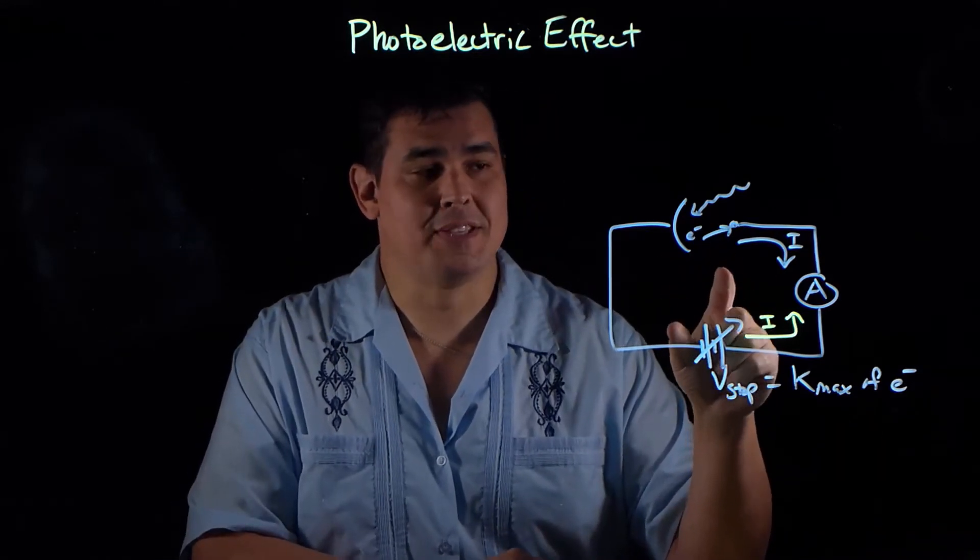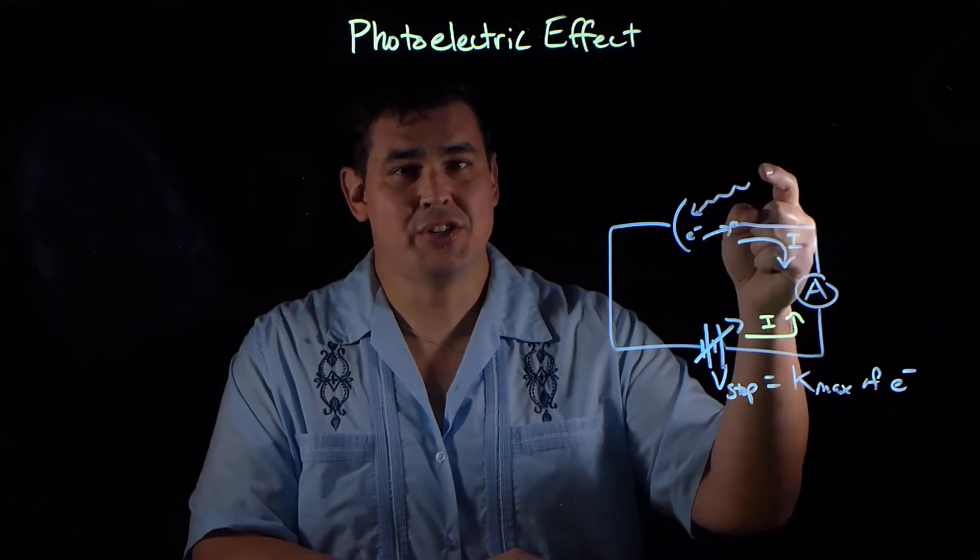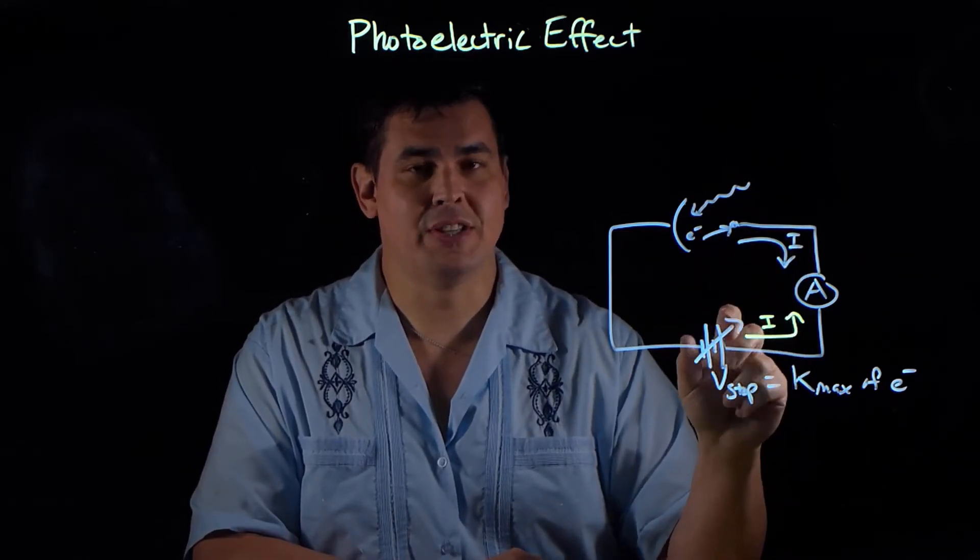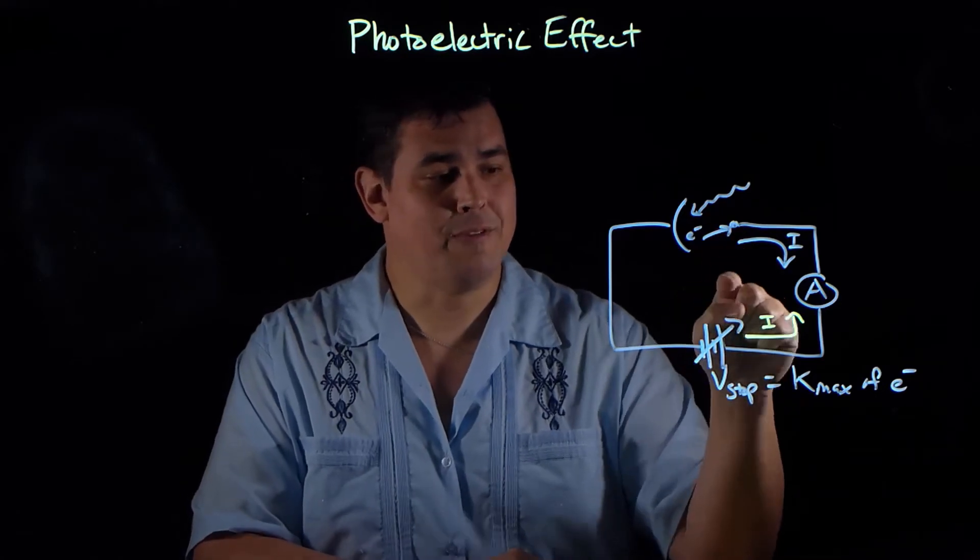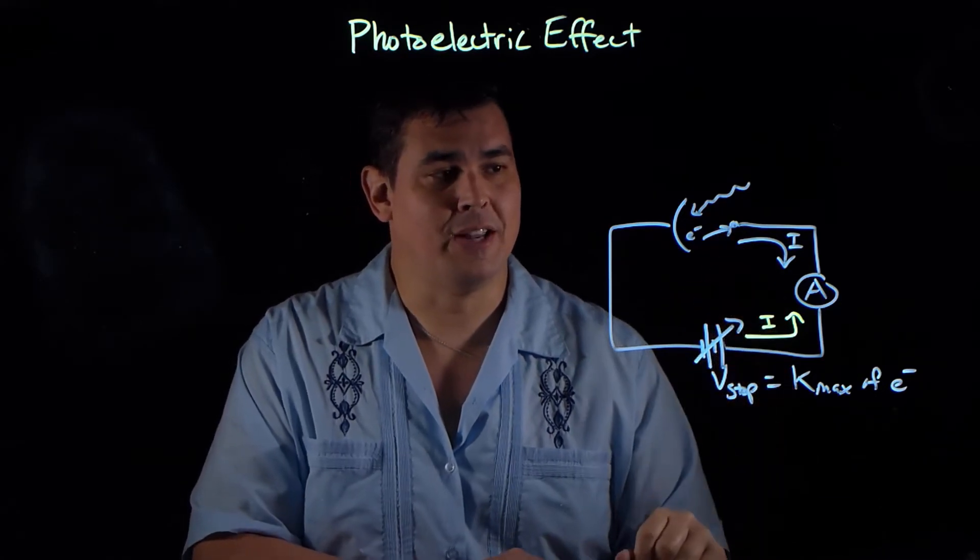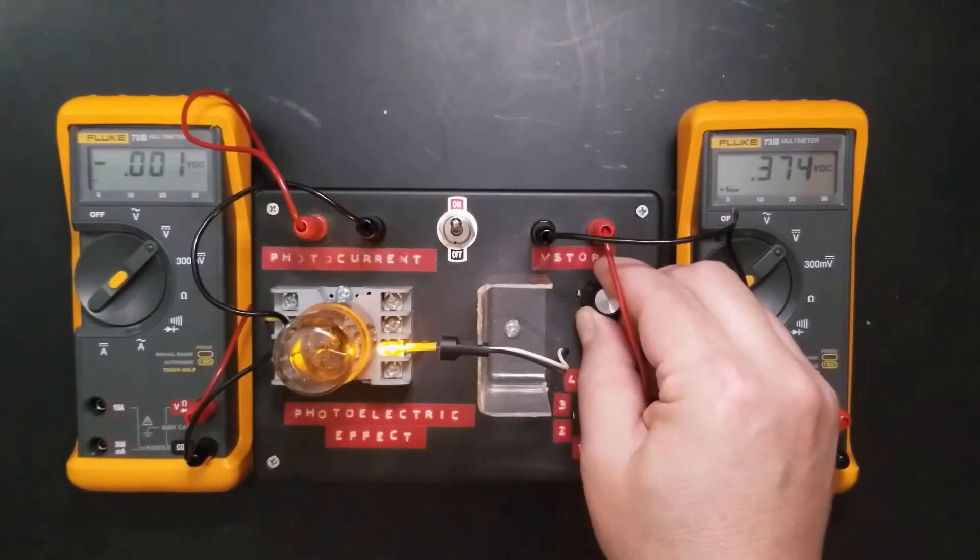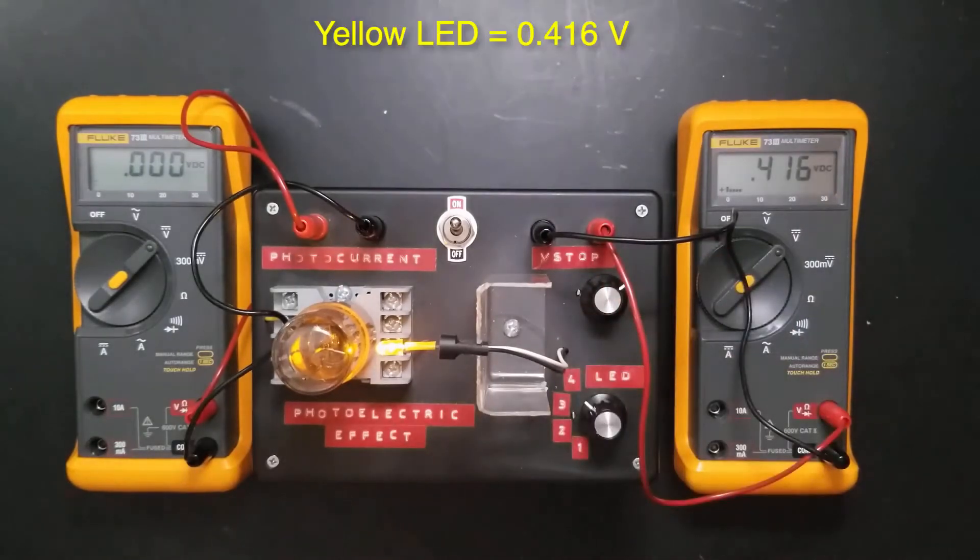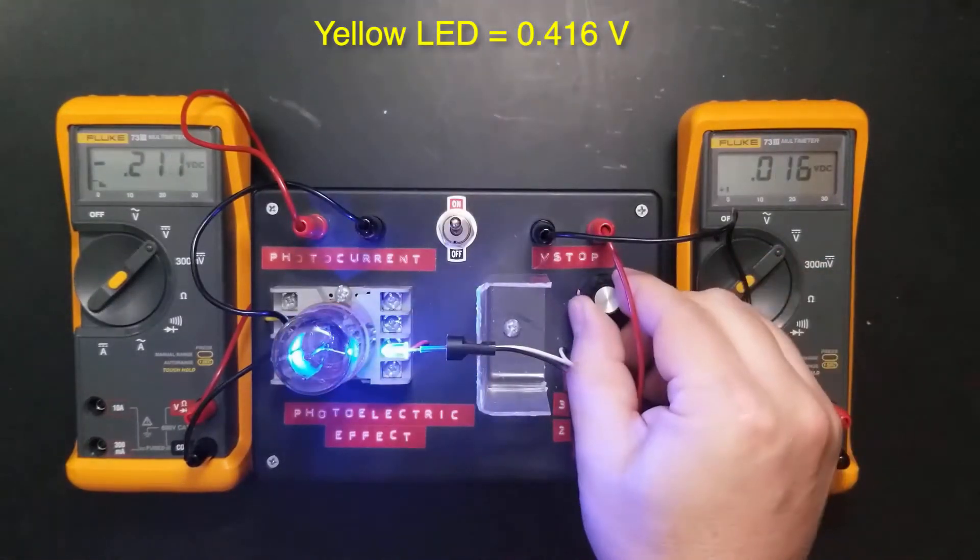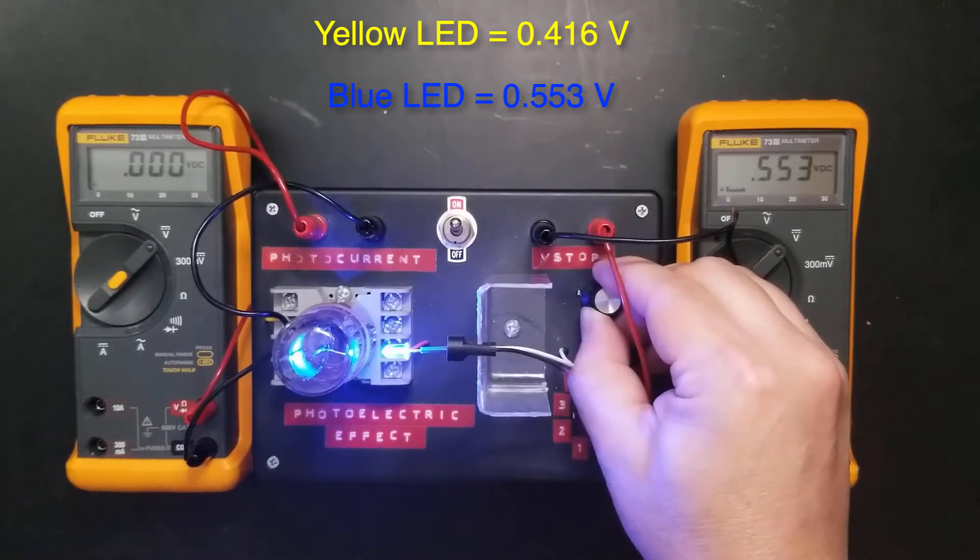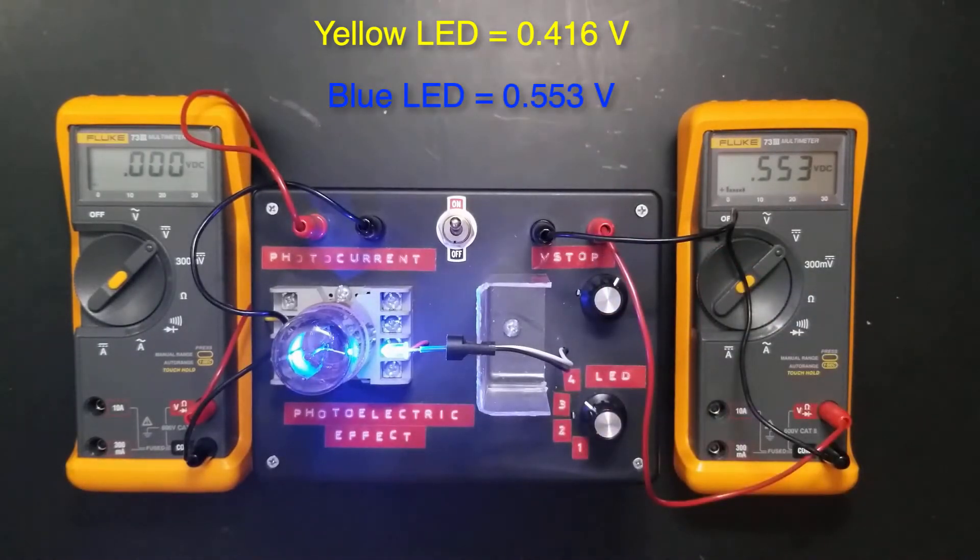So when they did experiments with this, they noticed that, yes, changing the intensity of the light changed the current, but when they came down here and looked at the stopping potential, that didn't really affect it. What affected the stopping potential was different colored light. So low-frequency light, like yellow light, had a small stopping potential, and that means that those ejected electrons had a small energy. But high-frequency light, like blue light, had a large stopping potential, and that means that those ejected electrons had a large energy.